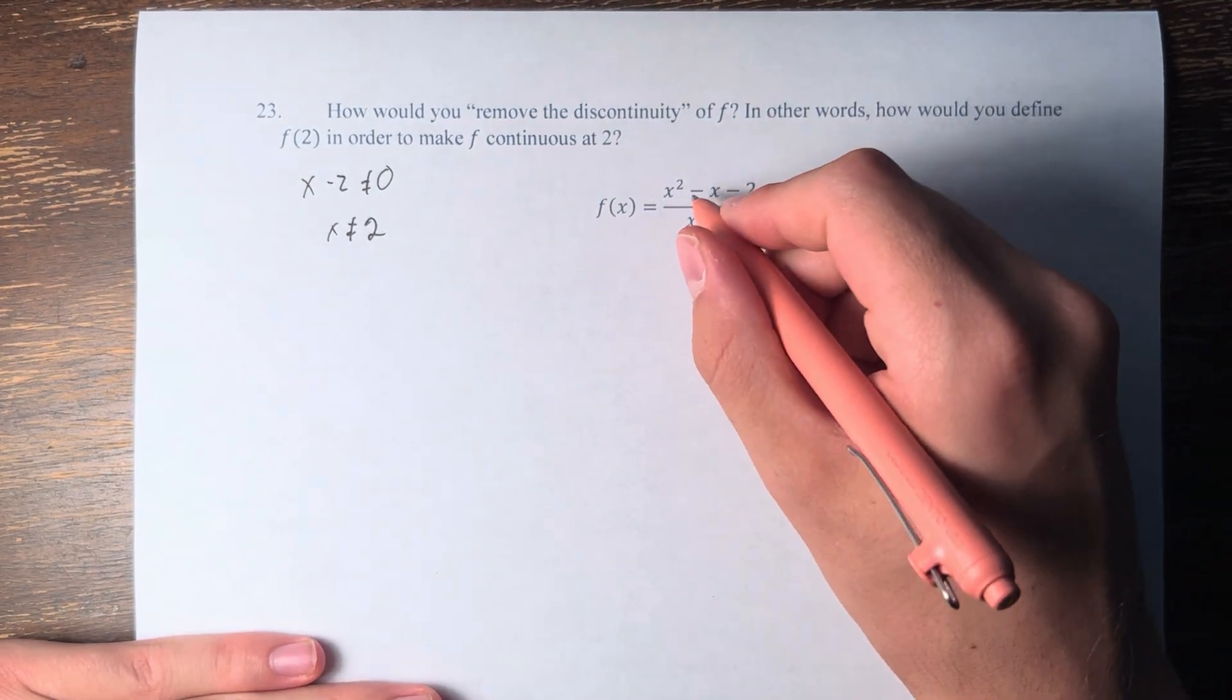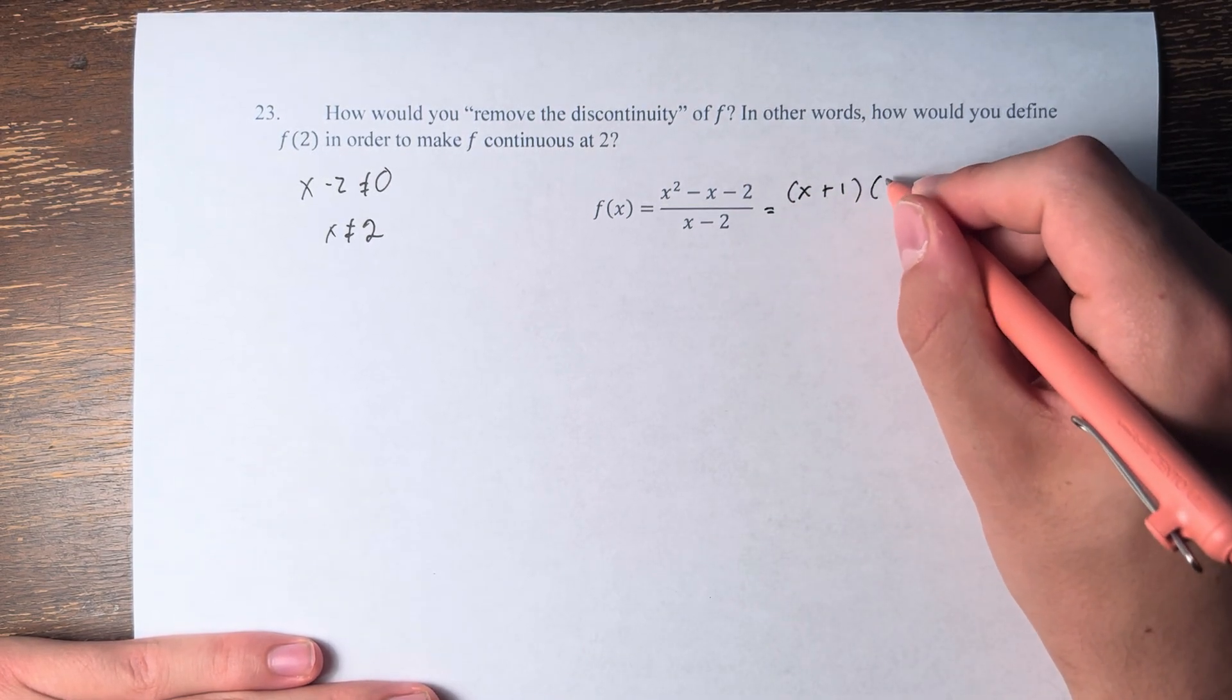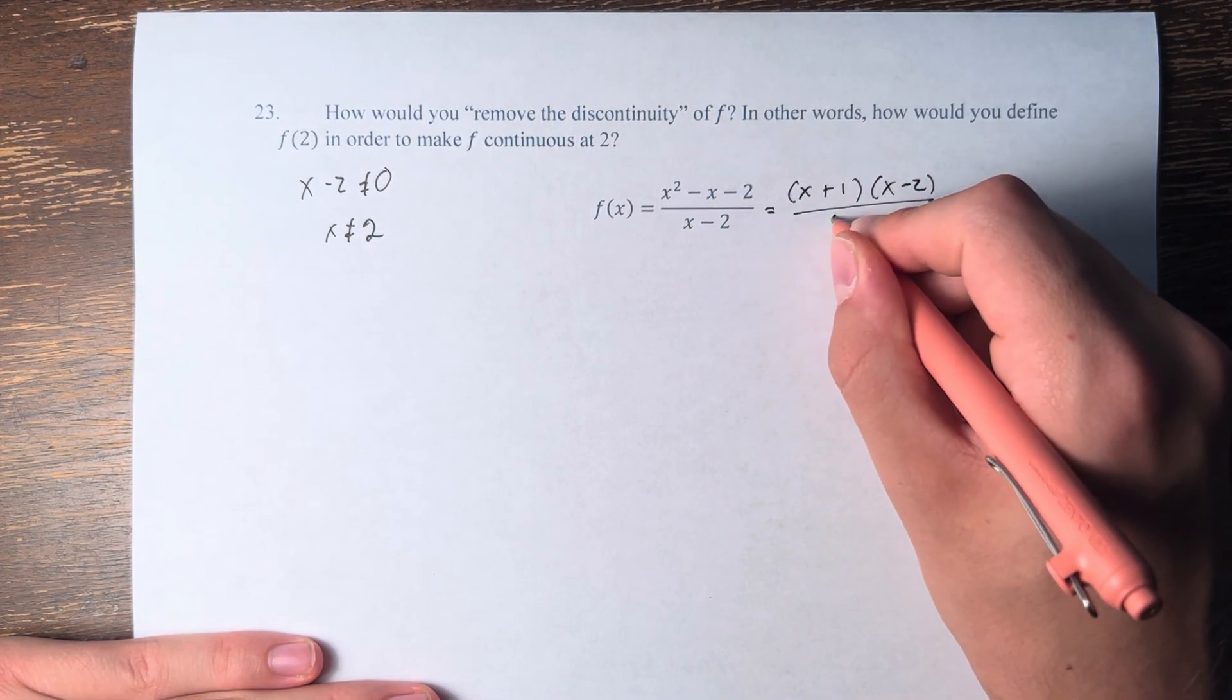But if we write f of x as factoring x squared minus x minus 2, this is x plus 1 times x minus 2 over x minus 2.